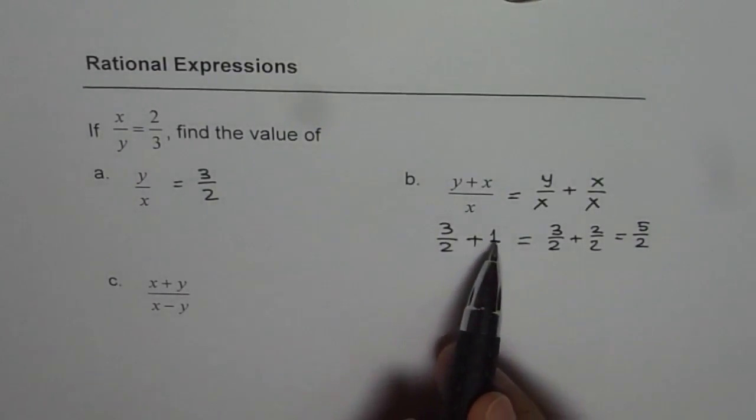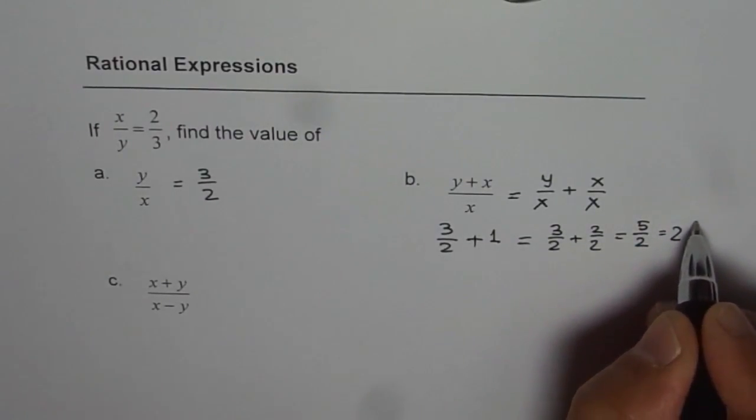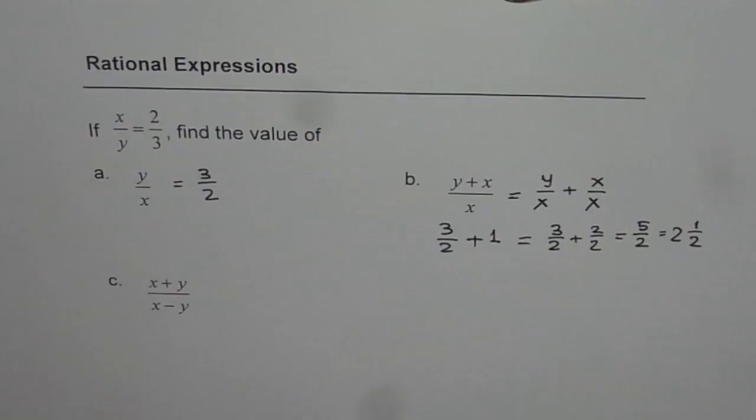We could have written 1 and 3 over 2, which we can also write as 2 and 1 over 2 as a mixed number. So either way, that is how we can do it.